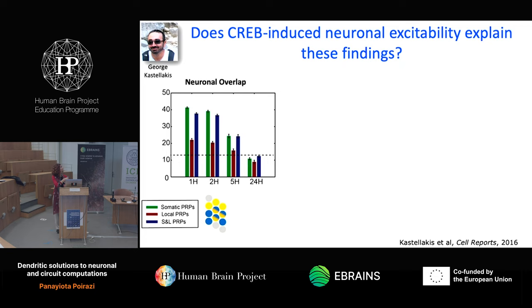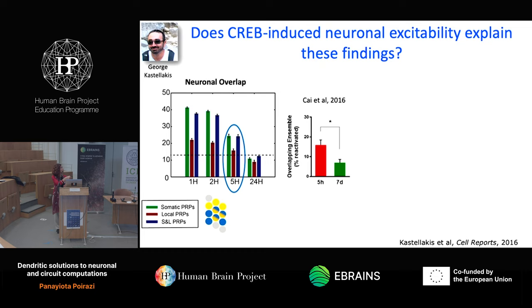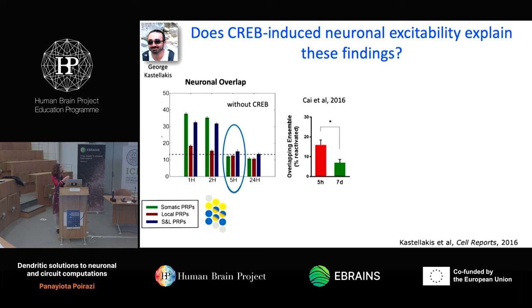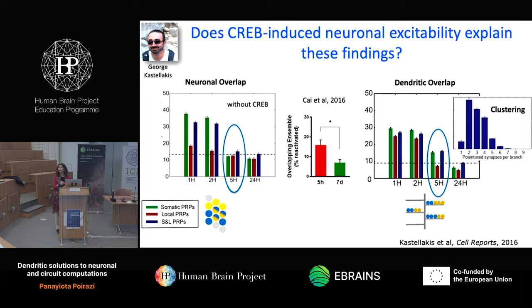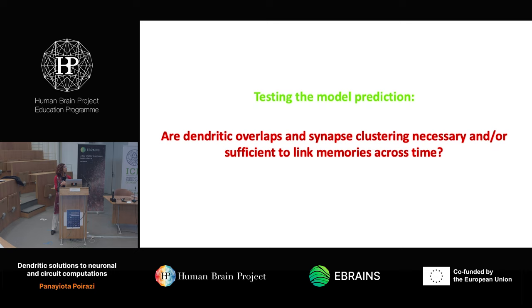What we found is that, very similar to the experimental data, if you separate two memories by five hours versus 24 hours, there is a significant overlap of around 20% in the population of neurons, which disappears if you eliminate the increase in intrinsic excitability — which was what Alcino thought would be the main mechanism. We also predicted that at the dendritic level, this linking would happen by organizing inputs from both memories into common dendrites, forming synaptic clusters. The model predicted that memory linking occurs because inputs co-cluster within common dendrites.